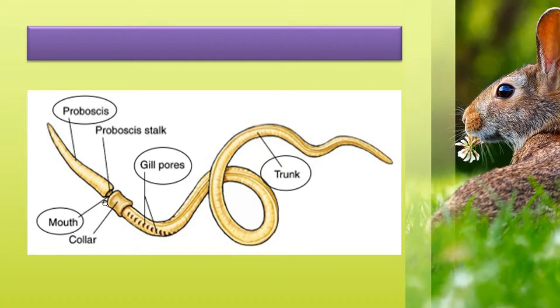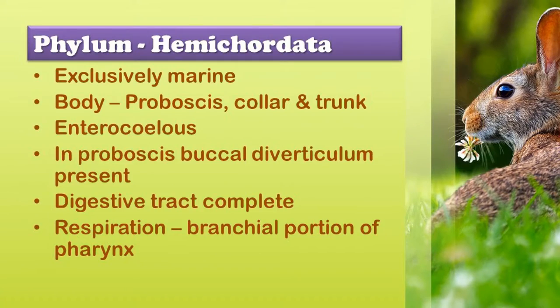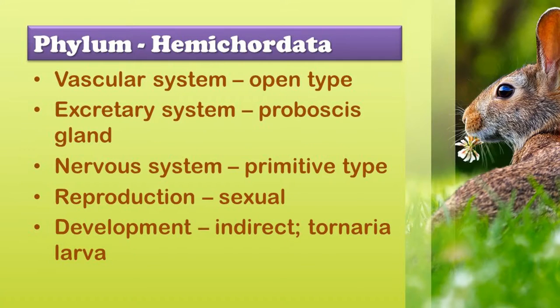In the diagram, this is the proboscis, this is the collar, and this is the trunk region. In the proboscis, buccal diverticulum is present. Digestive tract is complete — it starts with mouth and ends with anus. Respiration is by the branchial portion of the pharynx. Vascular system is open type — there are no blood vessels like arteries or veins. Excretion is by a single proboscis gland or glomerulus situated in the proboscis region. Nervous system is primitive type and reproduction is sexual.